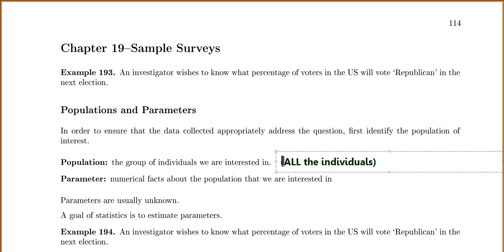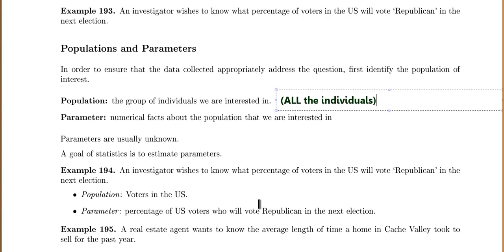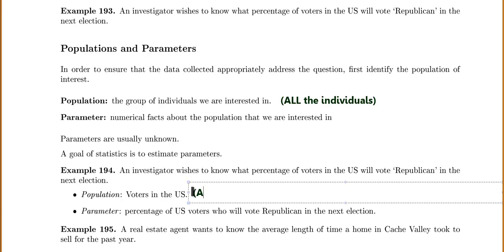One of our goals in statistics is to estimate our parameters. For example, if our investigator wants to know what percentage of voters in the U.S. will vote Republican in the next election, the population is all the voters in the U.S. The key word is 'all.' The parameter would be the percentage of U.S. voters who will vote Republican in the next election.